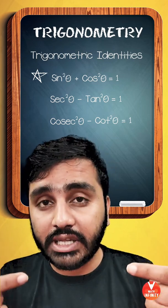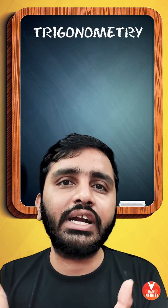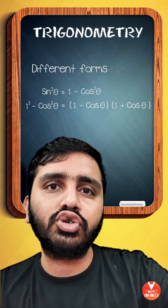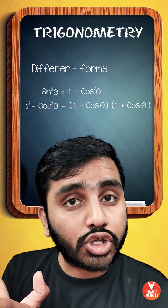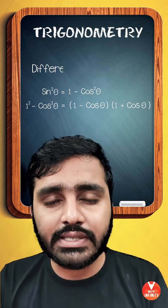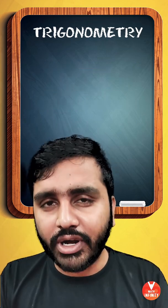You have to remember these three identities and their different forms as well. For example, sin²θ can be written as 1 - cos²θ, and 1 - cos²θ can be converted into (1 - cos θ)(1 + cos θ). So yes, this is the entire trigonometry revision.